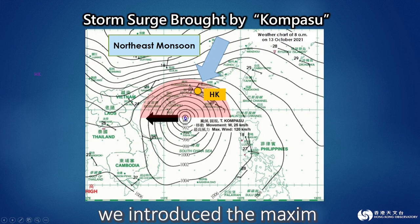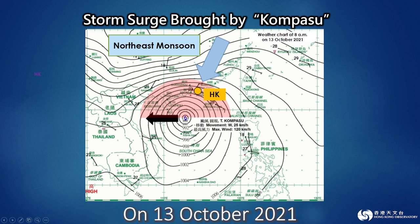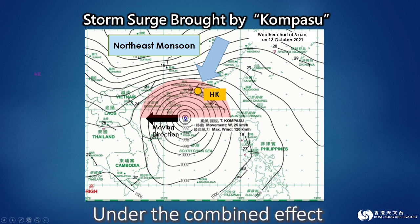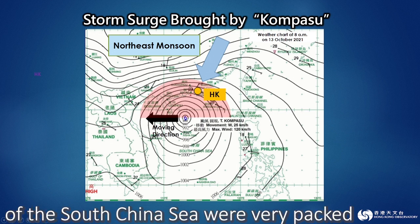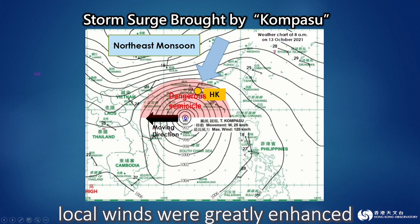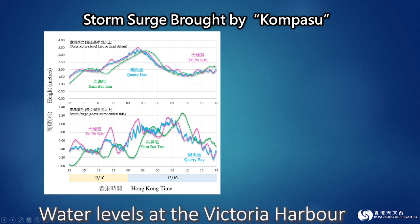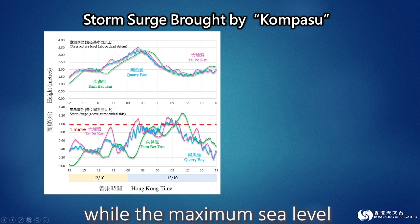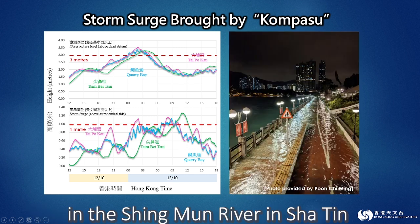In Episode 2, we introduced the maximum effect — that autumnal typhoons combined with the northeast monsoon will make the wind stronger. On 13 October 2021, tropical cyclone Kompasse skirted to the south of Hong Kong. Under the combined effect of the northeast monsoon, the isobars near the coast of southern China and the northern part of the South China Sea were very packed. With Hong Kong located within the dangerous semicircle of Kompasse, local winds were greatly enhanced. This combined effect also increased the impact of the storm surge. Water levels at Victoria Harbour and Tolo Harbour rose more than one metre above the normal tide level, while the maximum sea level was more than three metres high.